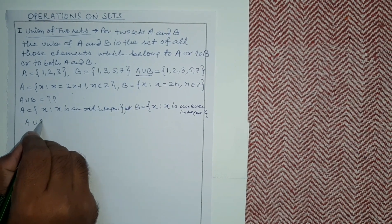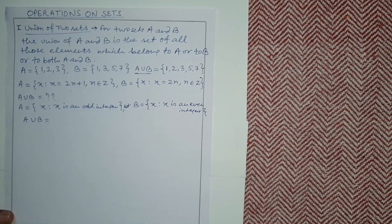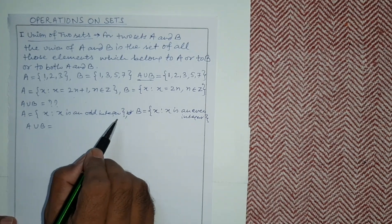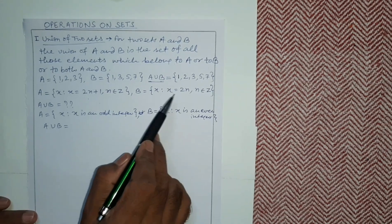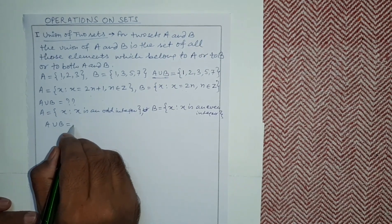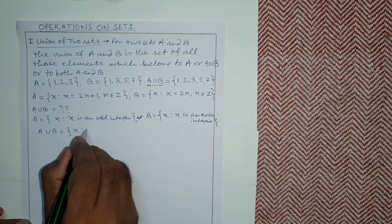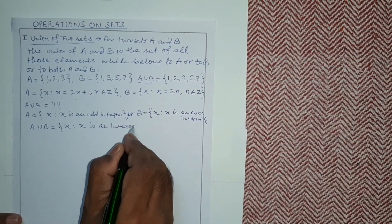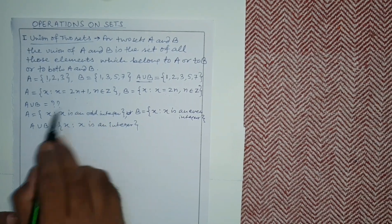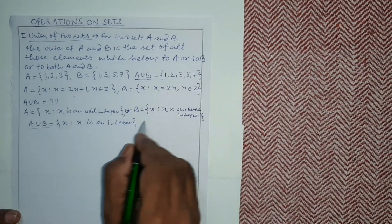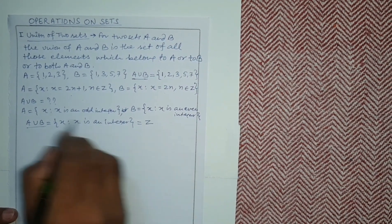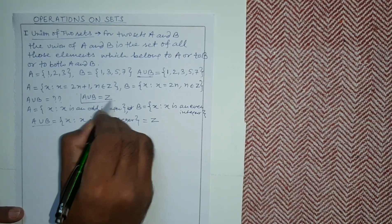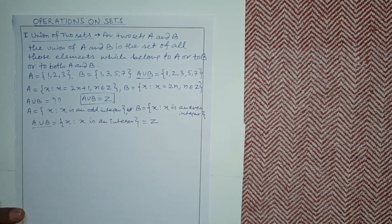A union B will contain all odd or even integers — that means all integers come together. Whether negative or positive, a negative number can still be odd or even using these formulas. So A union B is the set of all x such that x is an integer — A union B becomes the set of integers, written as Z.